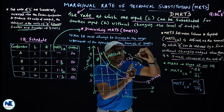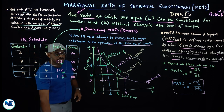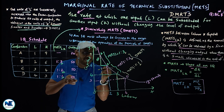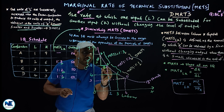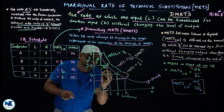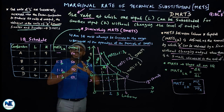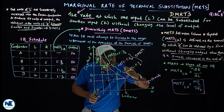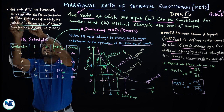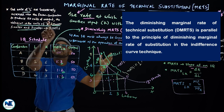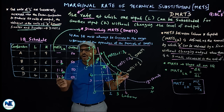This is the Diminishing Marginal Rate of Technical Substitution. The isoquant reveals that as the units of labor are successively increased in the factor combination to produce 50 units of output, the reduction in the units of capital becomes smaller and smaller.